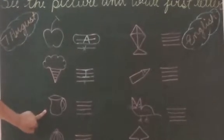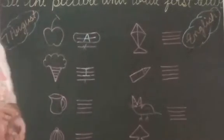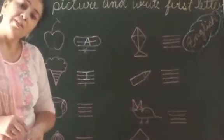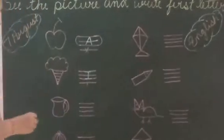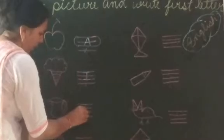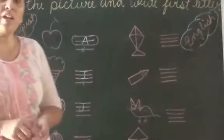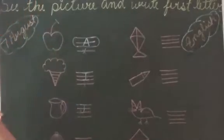It is the picture of jug. So here we write J. J for jug. Capital J.